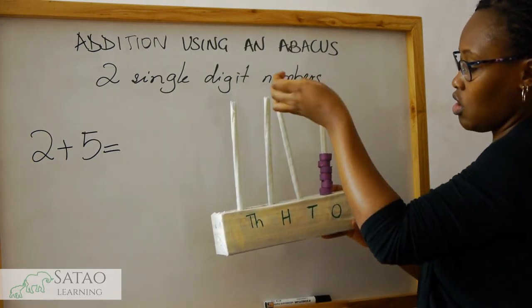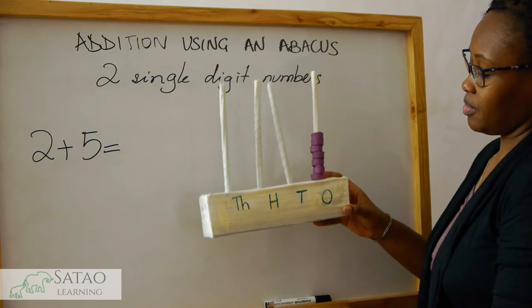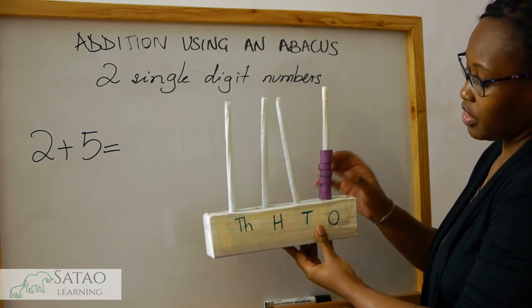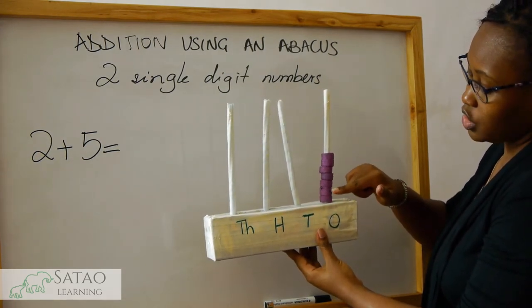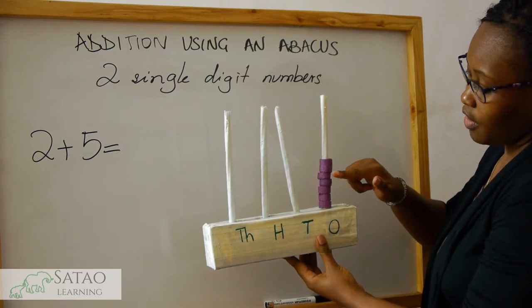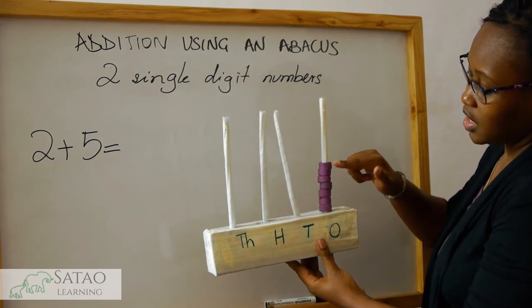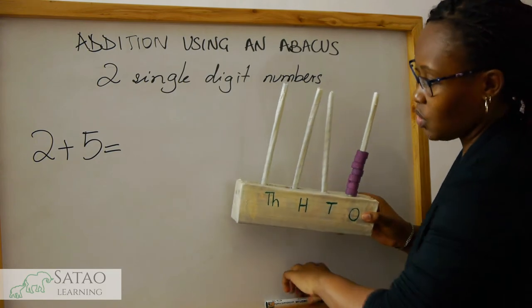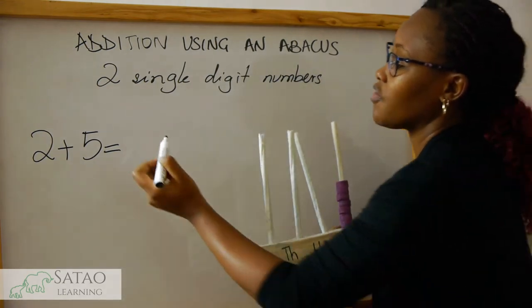So how many are those? One, two, three, four, five, six, seven. So there we write seven.